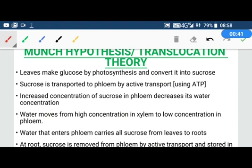Let's start. How does this happen? First, leaves make glucose by photosynthesis and then convert it into another chemical called sucrose. All the glucose is converted into sucrose.